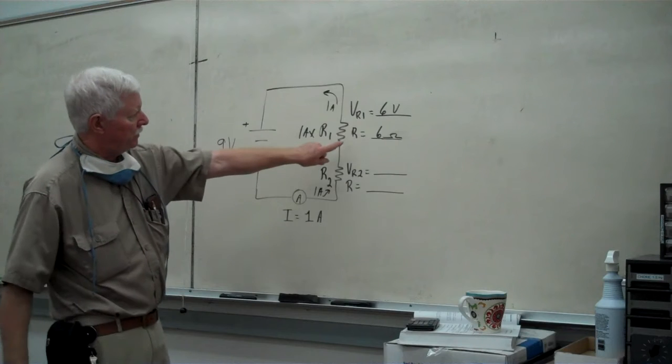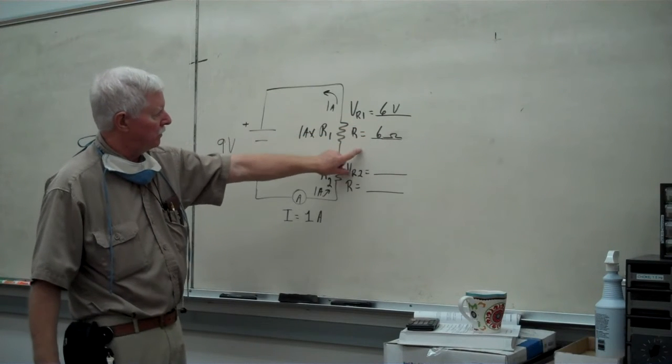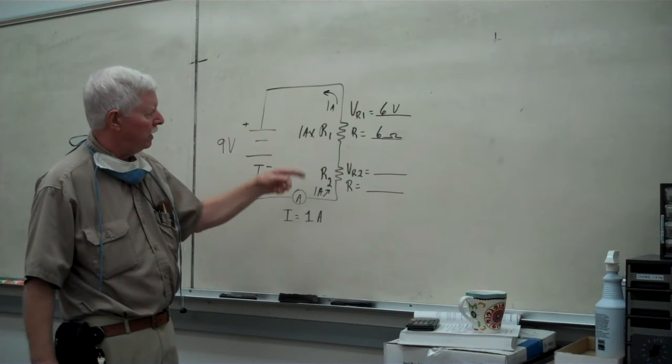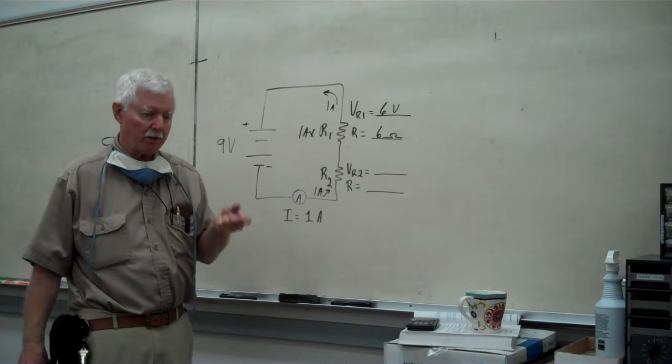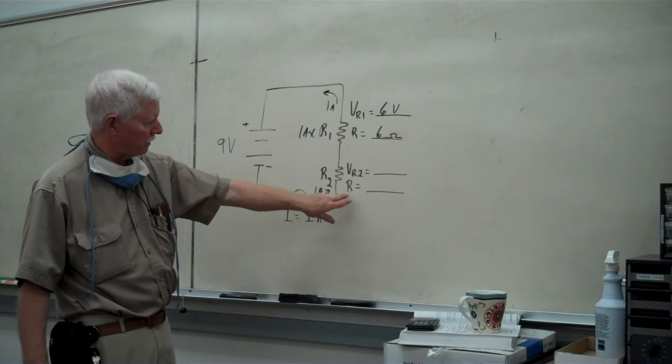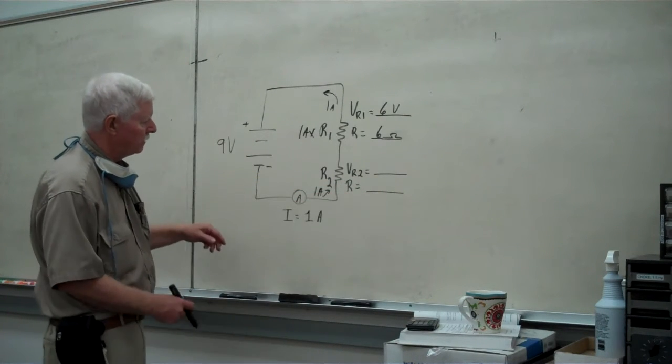Now, because we've got this, we just derived the 6 volts from the information given between the circuit current and the amount of resistance of this device, we can actually use Kirchhoff's voltage law and determine what the voltage drop is here, and subsequently probably what this resistor is.